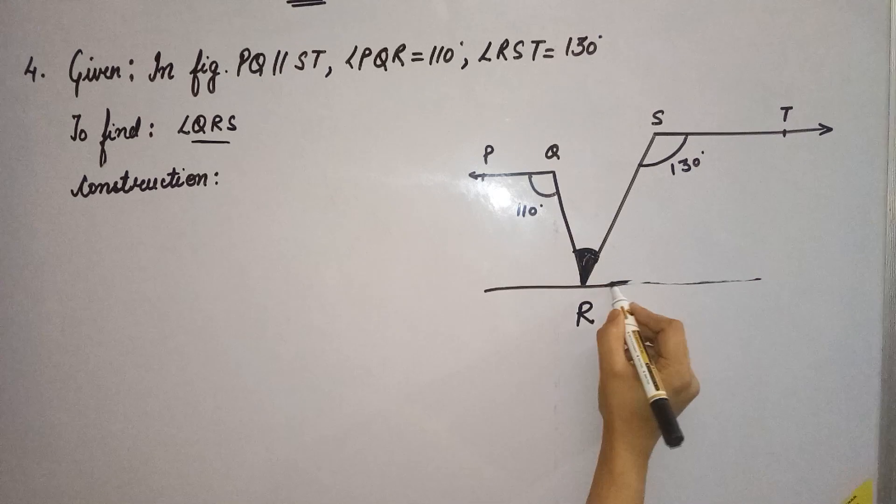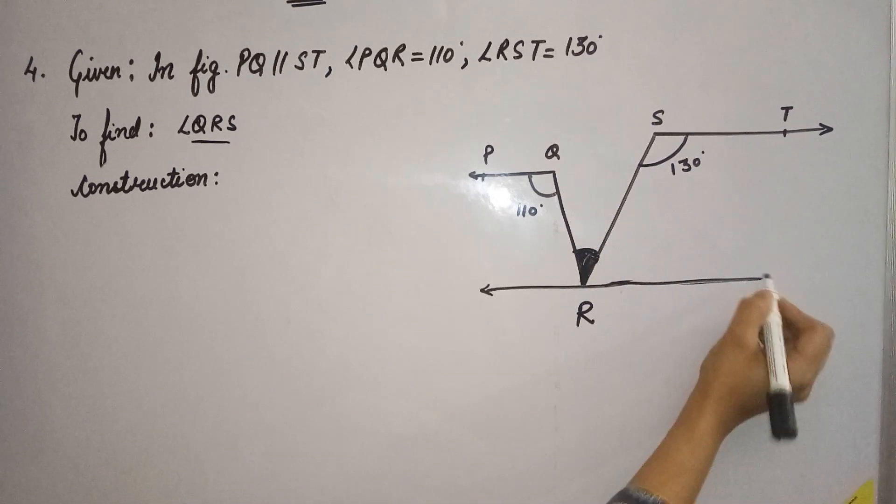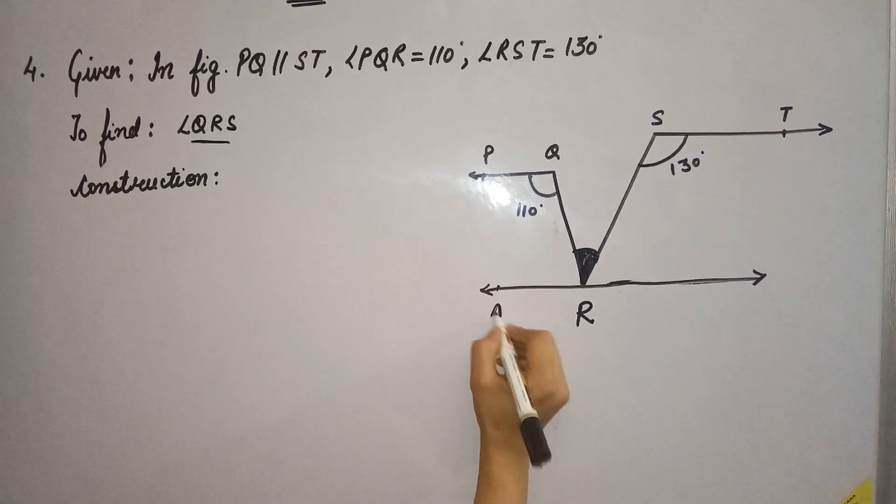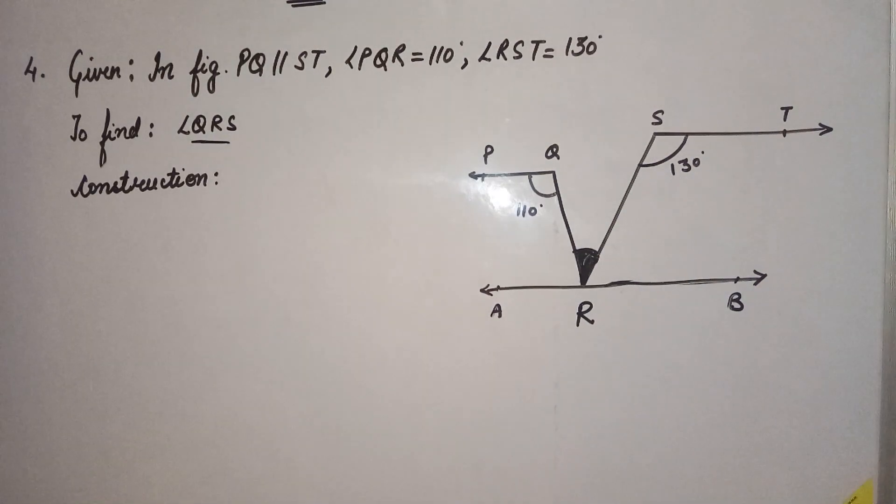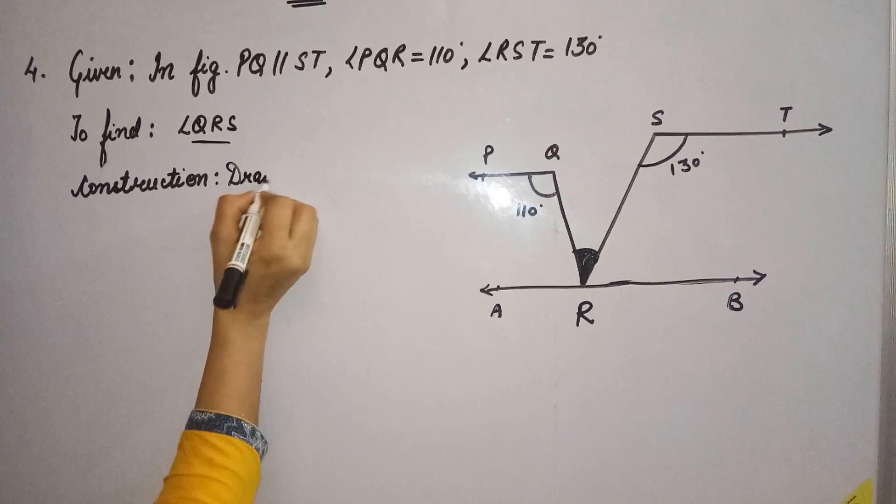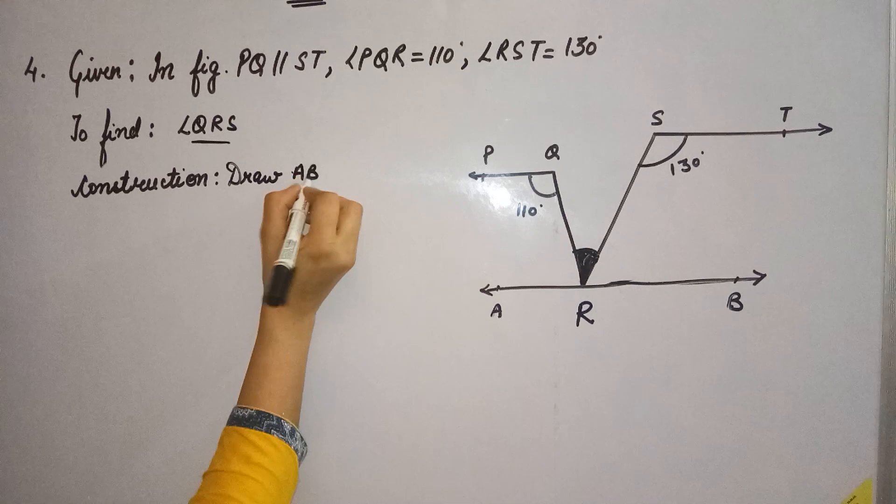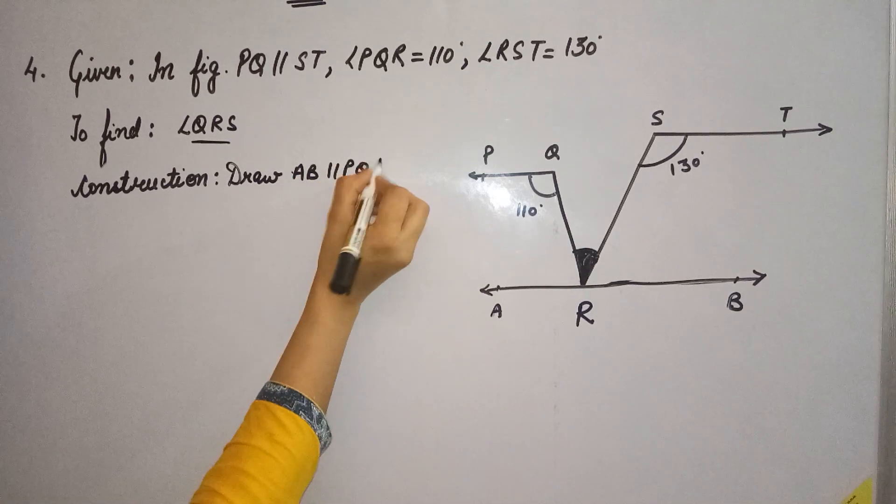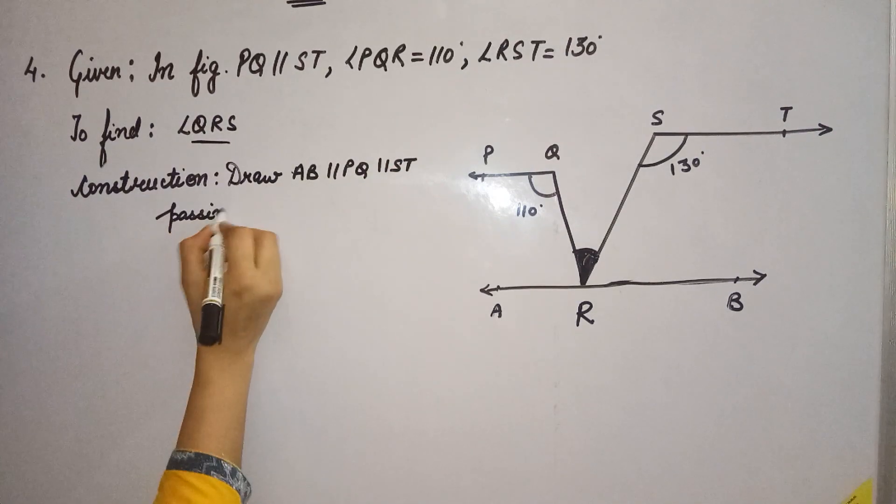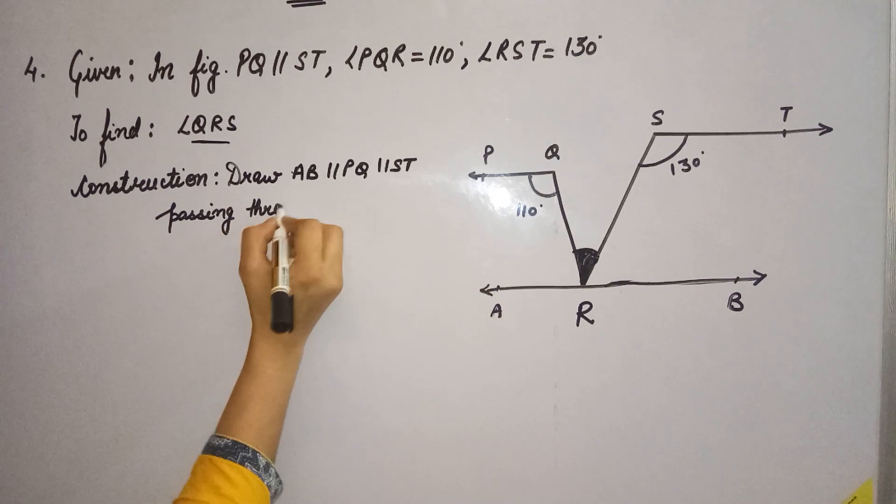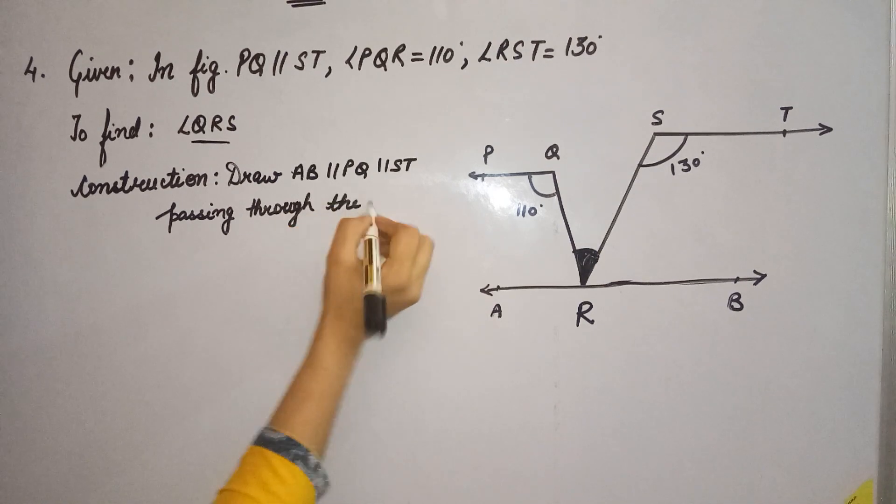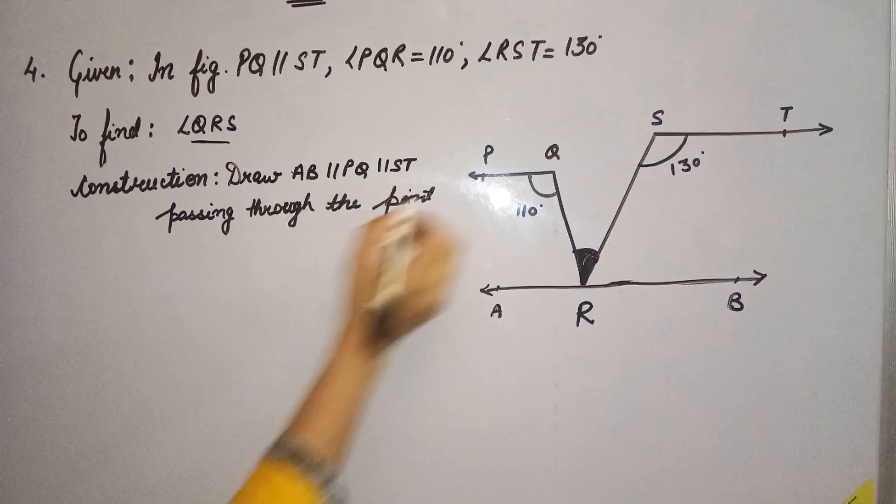Now we have to draw a line which is parallel to PQ and ST. Let the line be AB, passing through the point R and parallel to the lines PQ and ST.